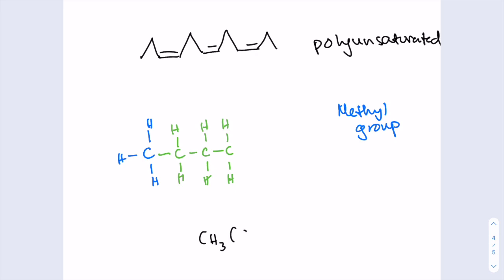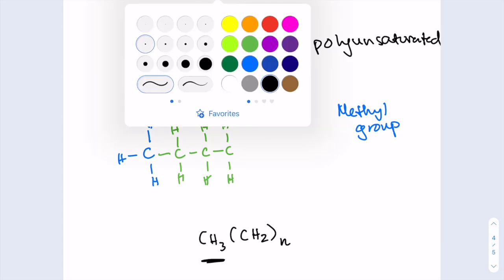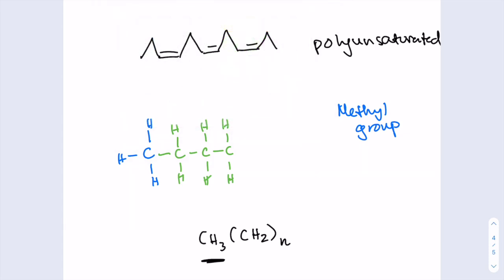And this is why in the general formula for fatty acid, it's actually CH3(CH2)N. The hydrocarbon chain is actually CH2N, where N is any integer. Which shows how the length of that hydrocarbon chain can vary. This CH3 is the methyl group, and the third group is the carboxyl group.